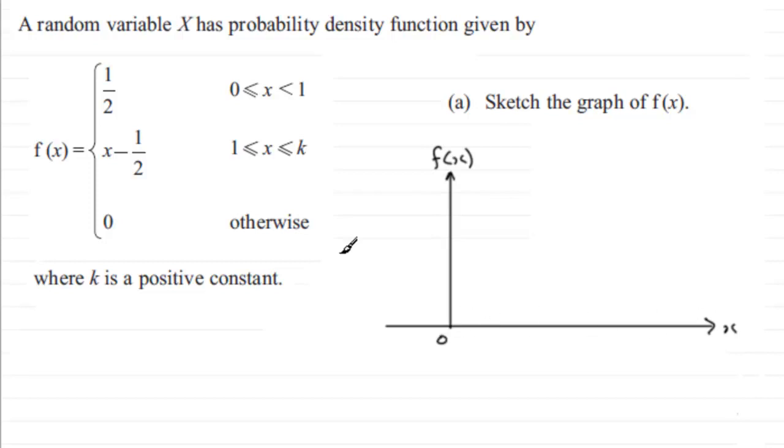We're told that it's a constant value when x is between 0 and 1. It's that constant value of 1/2. So let's say we've got 1/2 there, and we'll put 1 down here. So if it's a constant value of 1/2, it's going to be a horizontal line like that.